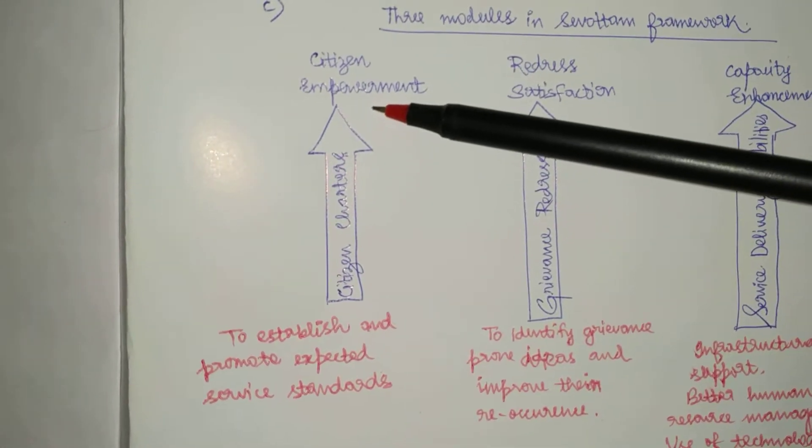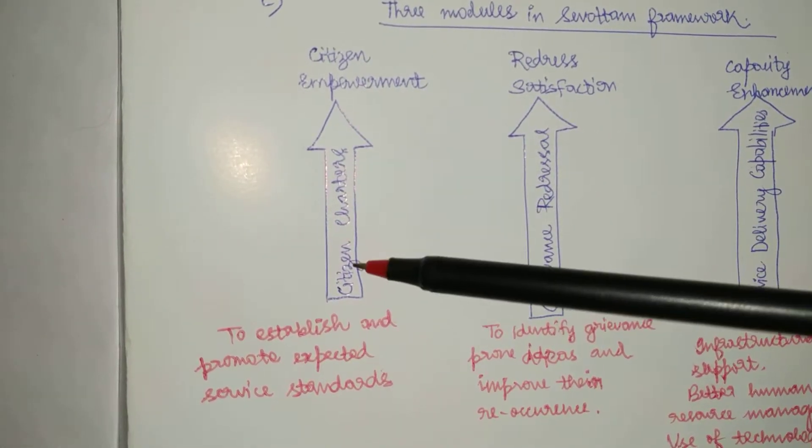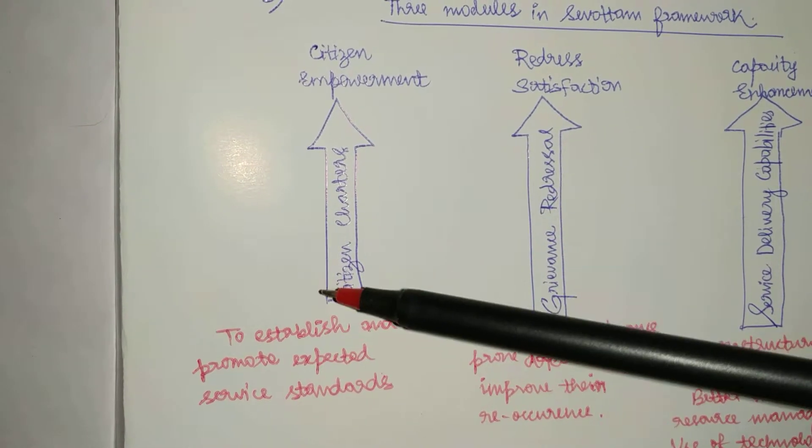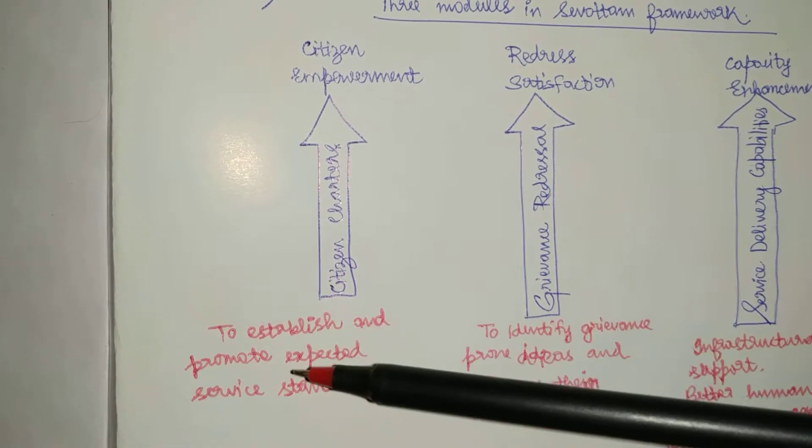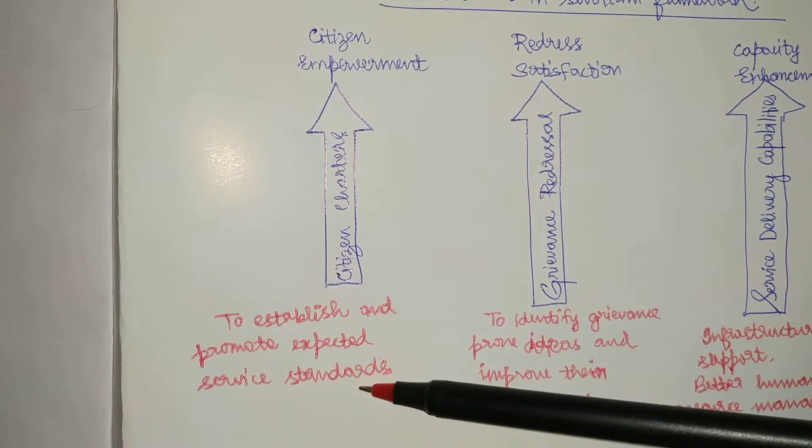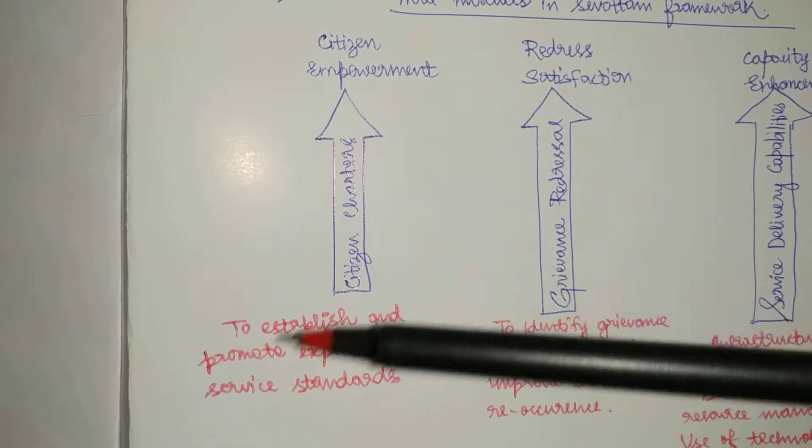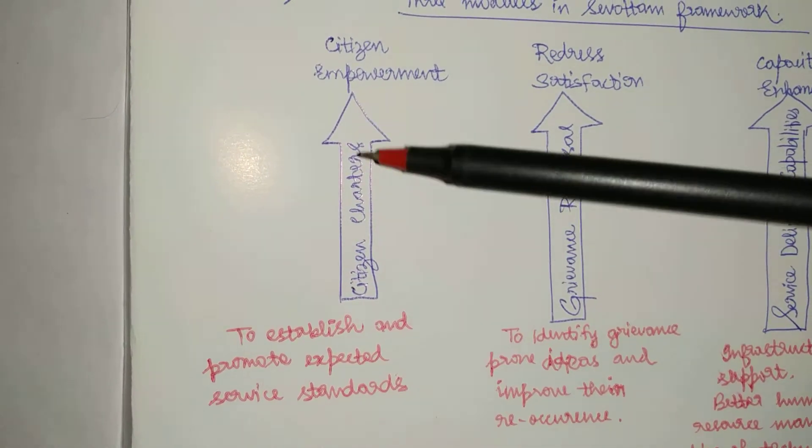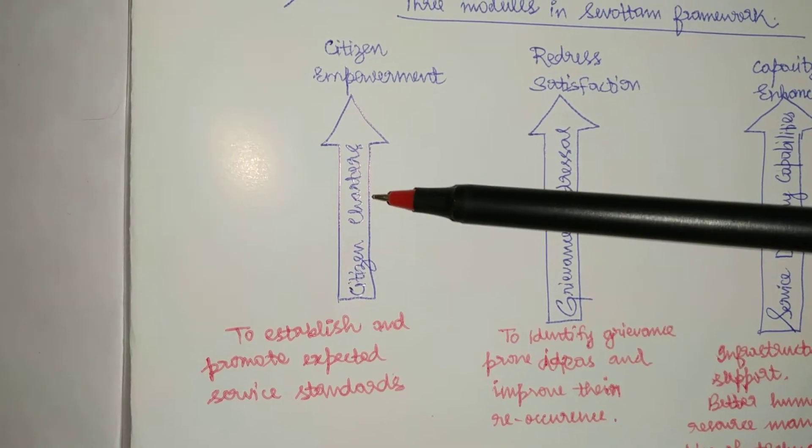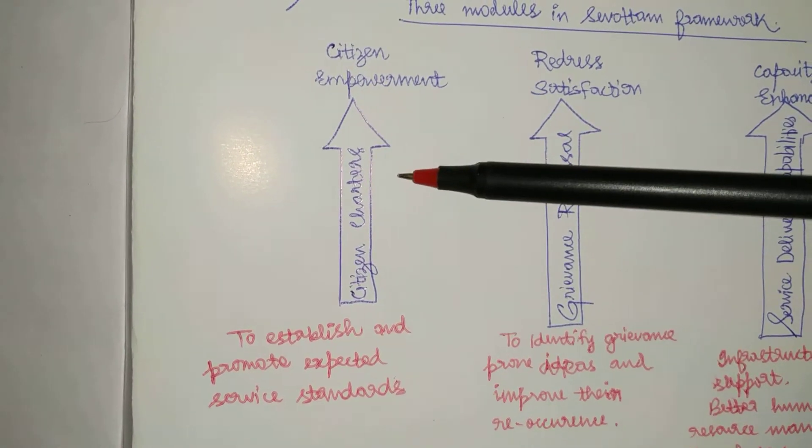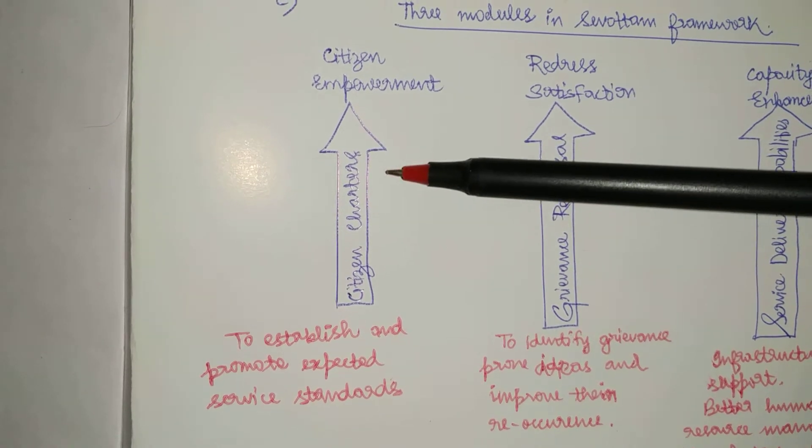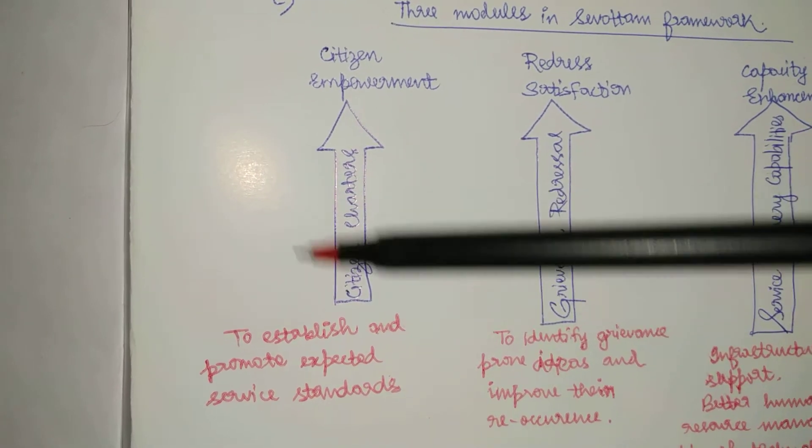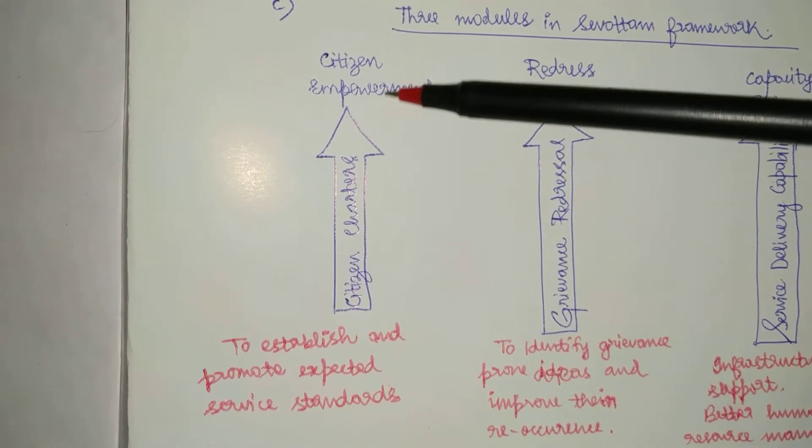The first pillar is citizen empowerment. Now citizen charter establishes and promotes the expected service standards. What is the time frame to deliver the service? What are the objectives? So this establishes the norms of the service.